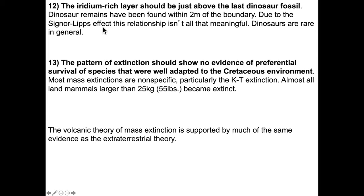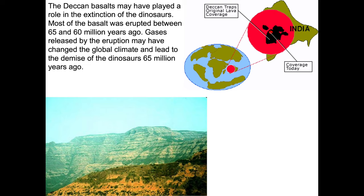If things are rare, you don't expect to find a continuous deposit of them. We know that dinosaurs are rare in general, which is why people are willing to pay so much for a dinosaur skeleton. Number thirteen: the pattern of extinction should show no evidence of preferential survival of species well-adapted to the Cretaceous environment. Most mass extinctions are nonspecific, particularly the KT extinction — almost all land animals larger than 25 kilograms became extinct. The volcanic theory of mass extinction is supported by much of the same evidence as the extraterrestrial theory, which brings some of these into conflict.